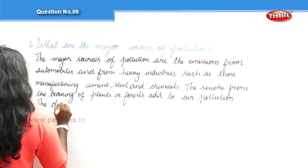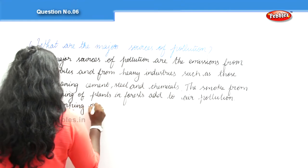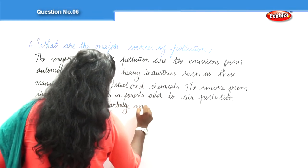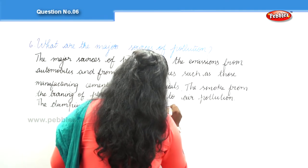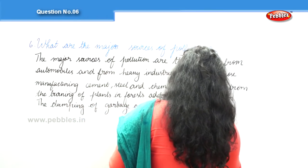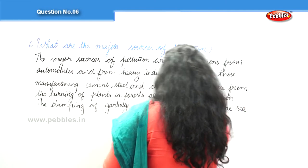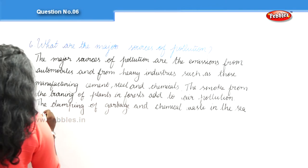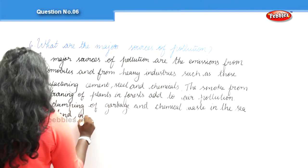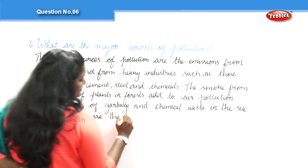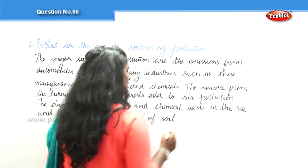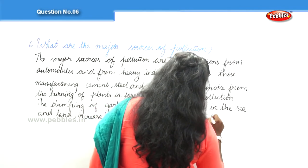The dumping of garbage and chemical waste in the sea and on land increases the level of soil and water pollution.